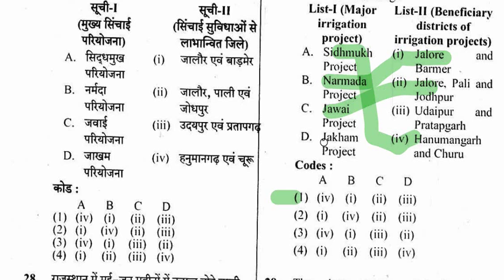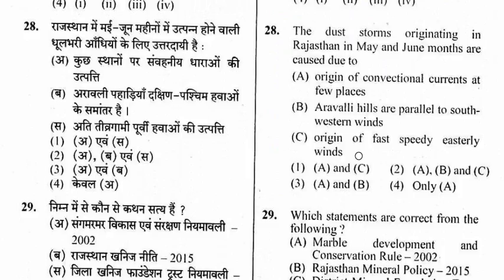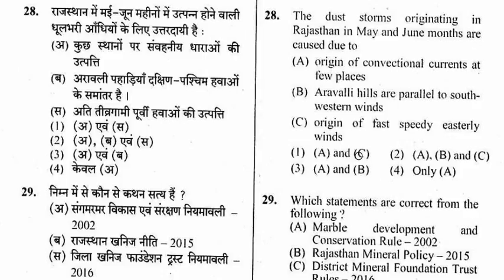Question 28: The dust storms originating in Rajasthan in May and June are caused due to which factor? Options include origin of convectional currents at few places, Aravalli hills being parallel to south-western winds, and origin of fast easterly winds. The right option is option 4 — only A is correct: origin of convectional currents at few places.